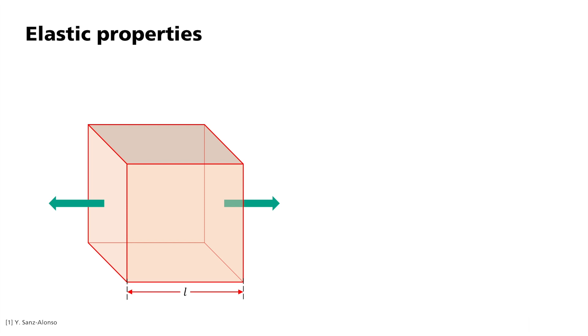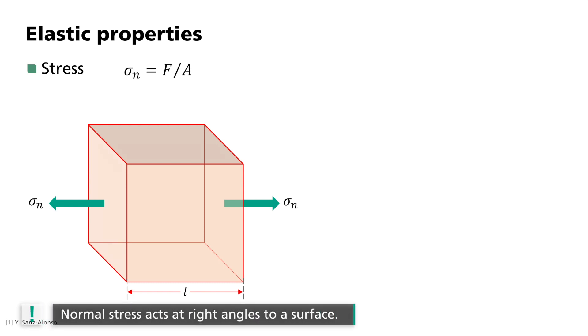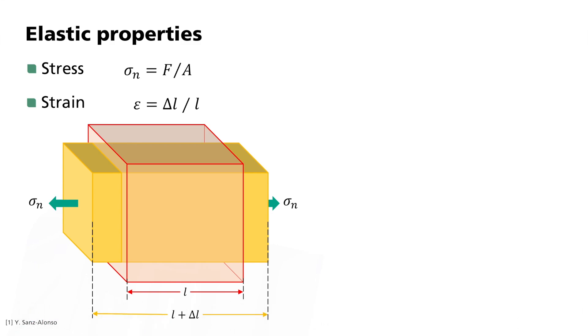In all cases, they describe how a material reacts on an external force. Here, the force F acts perpendicular to the area A. This is the normal stress sigma n. It results in a change of length, which is expressed as the strain epsilon. Under this stress, a body is stretched.